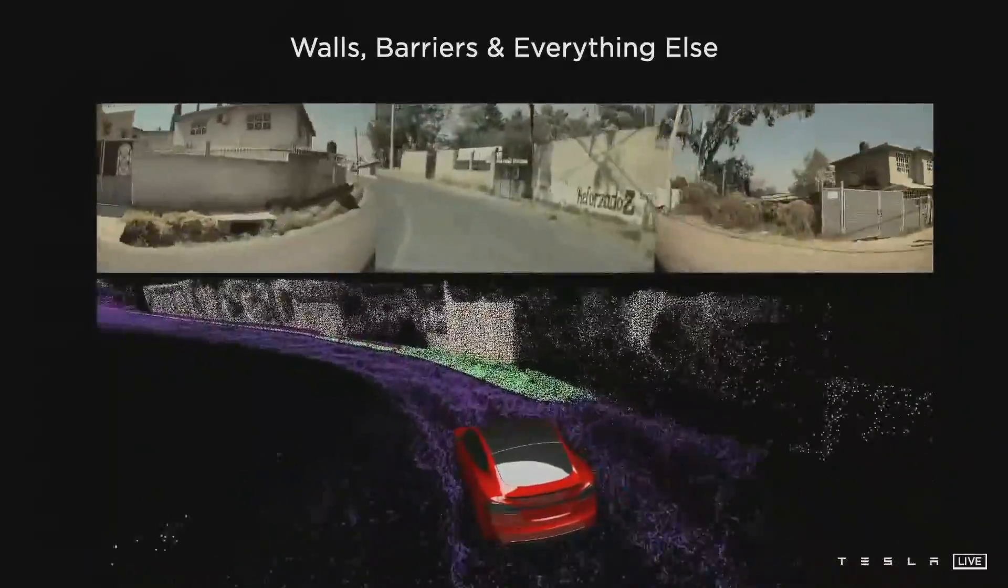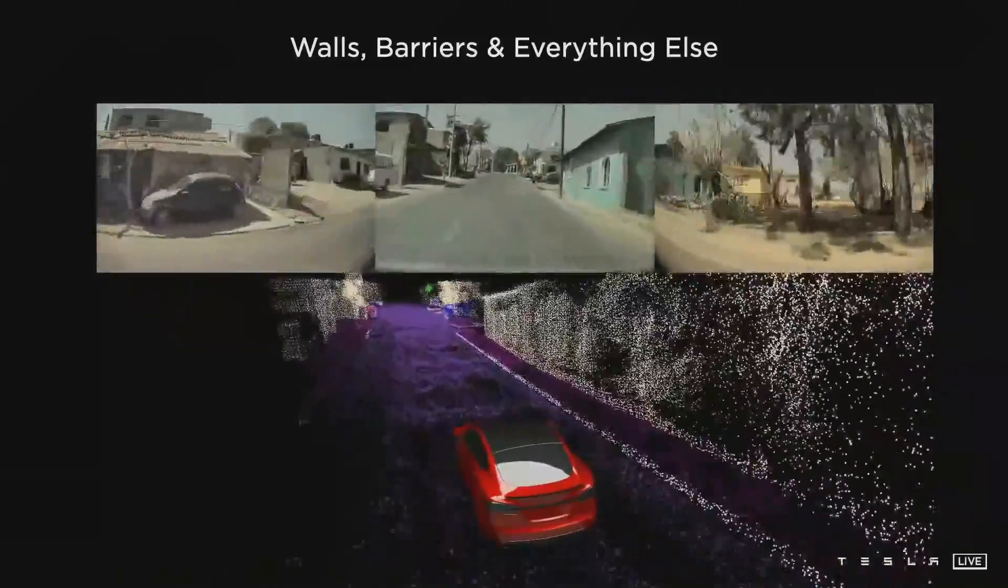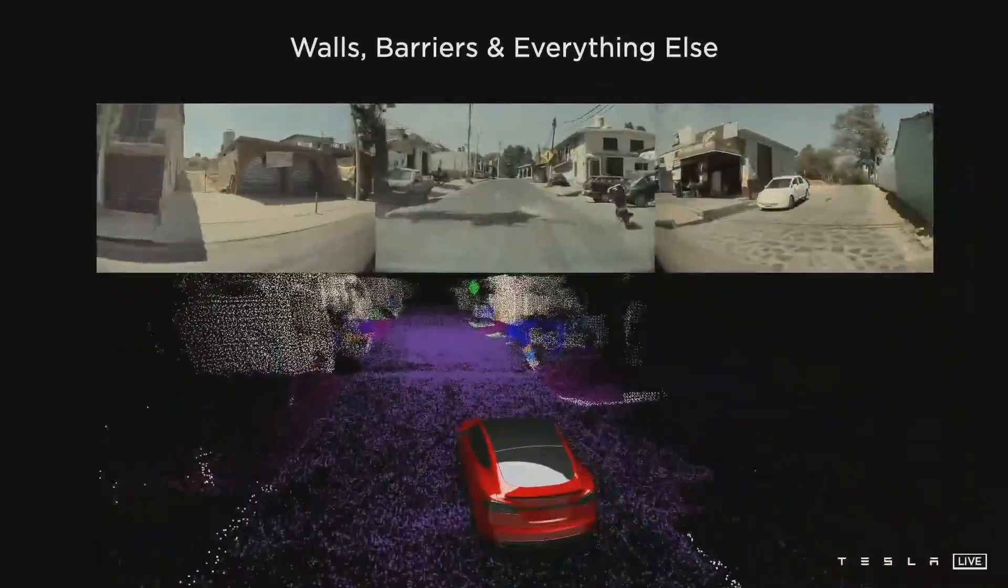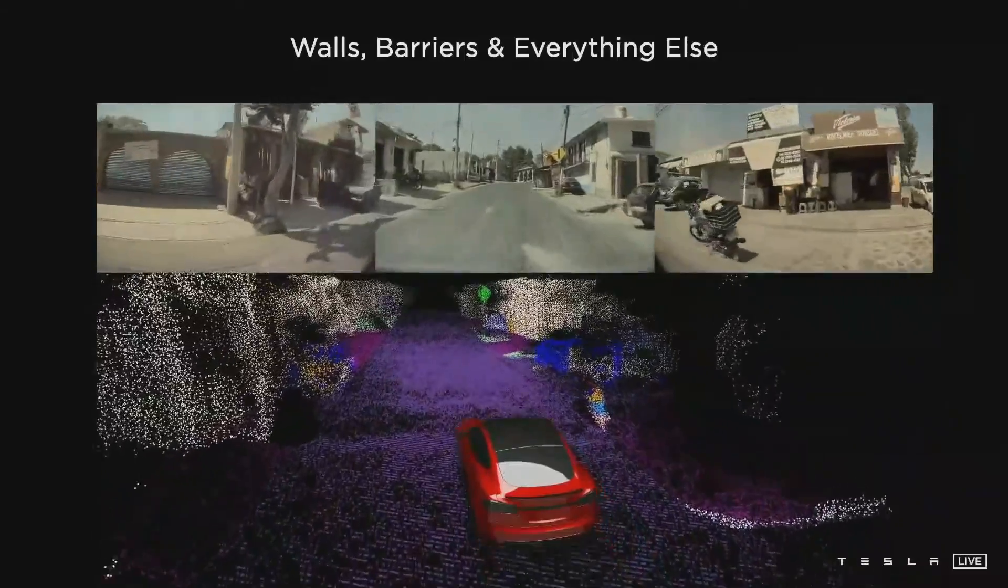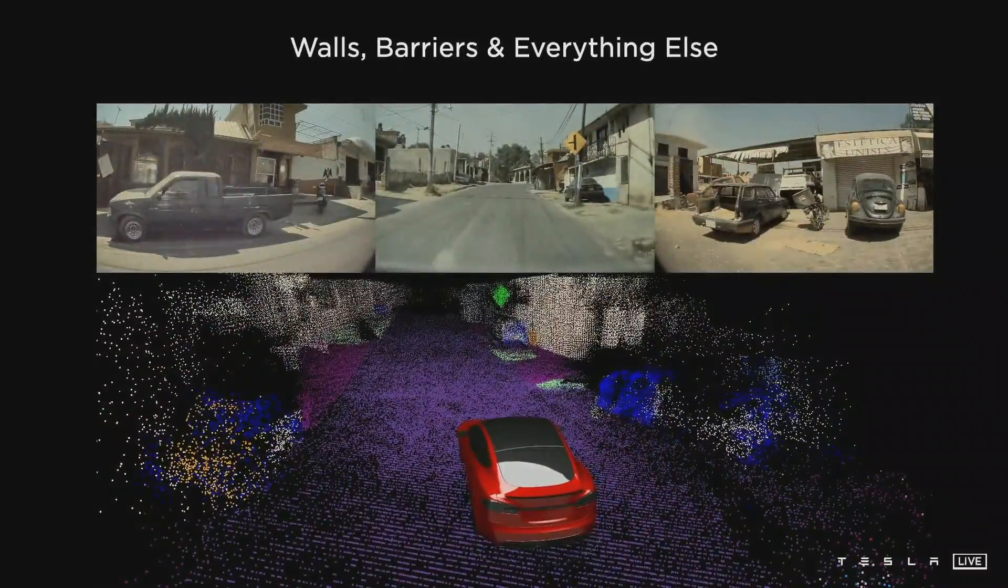Typically these points require texture to form associations from one frame to the next frame. But here we are able to produce these points even on textureless surfaces like the road surface or walls. And this is really useful to annotate arbitrary obstacles that we can see in the world.